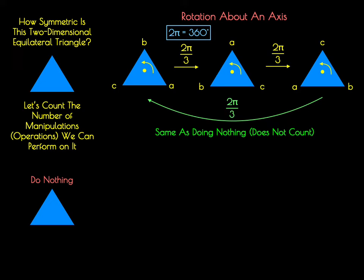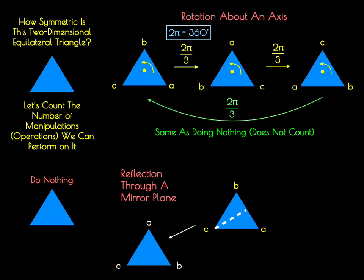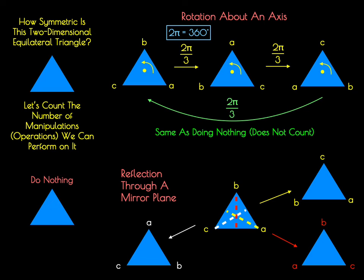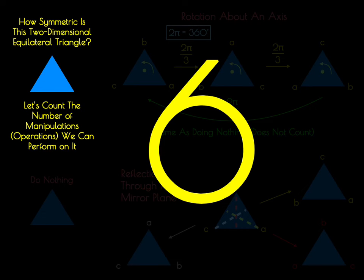So far we have one operation with the do nothing and two rotational operations. In addition to those operations, we also have reflections through a mirror plane. We can draw a mirror plane that bisects the C angle and inverts A and B. We have another mirror plane that bisects the A angle and interconverts C and B. And a third that bisects the B angle and interconverts A and C. So we have a total of 6 symmetry operations. So a way in which we can quantify how symmetric this is is to say that there's 6 symmetry operations that we can perform on this two-dimensional equilateral triangle.